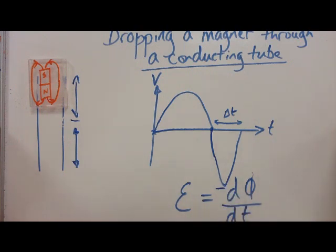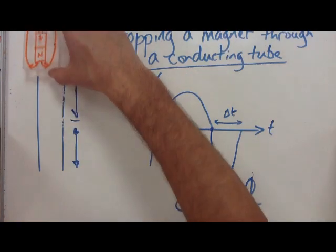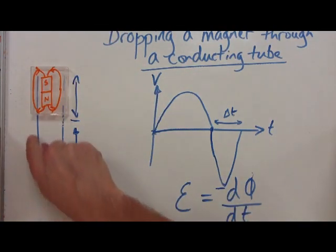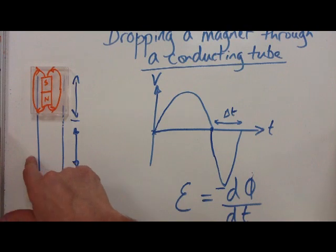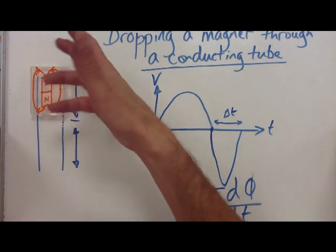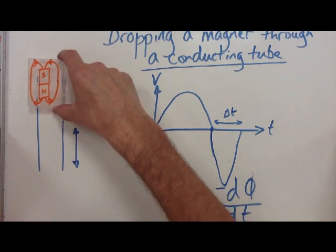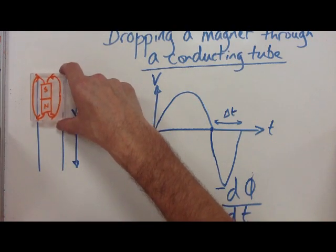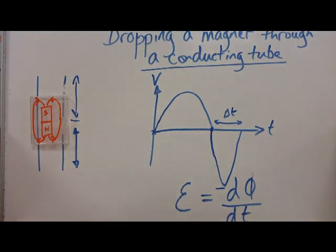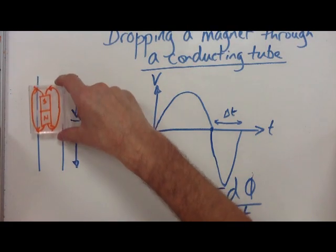Lenz's Law tells us — like air resistance — the faster this falls down through here, the bigger the current will be, which means the bigger the magnetic field induced within that tube will be, which means the bigger the retarding effect on the magnet will be as it drops. So it reaches terminal velocity — not because of air resistance, but because of the Lenz's Law effect.